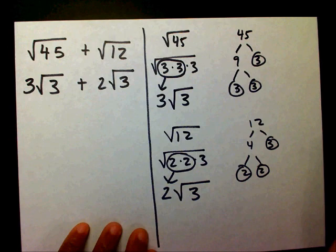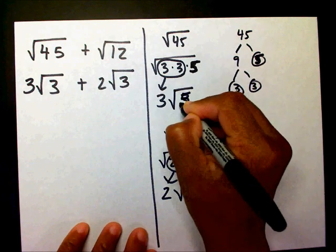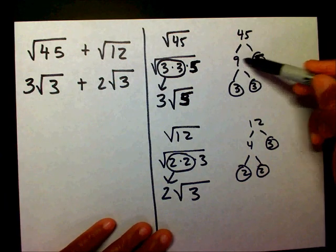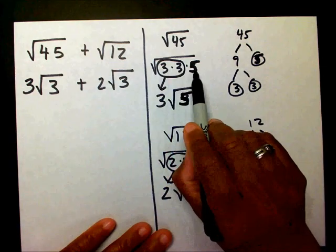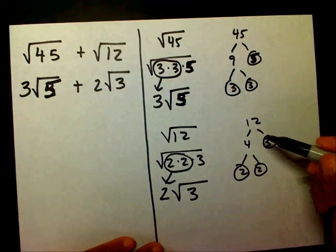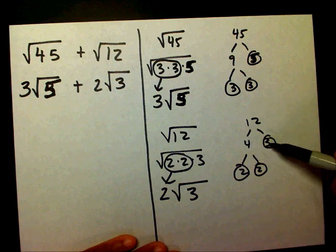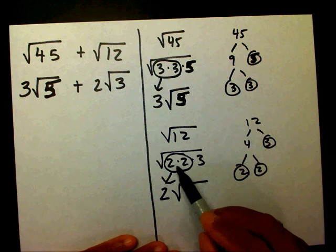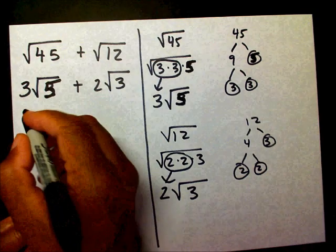I made a mistake — that should be a 5 in the factor tree for 45. Let me redo it: 45 is 9 times 5, so underneath my radical I have 3, 3, and 5. Three goes outside and 5 stays inside. For radical 12, I have 2 times 2 times 3, which gives me 4 and 3, and 4 gives me 2 and 2. I pull out the 2 since the square root of 4 is 2, and 3 stays in. So I end up with 3 radical 5 plus 2 radical 3.